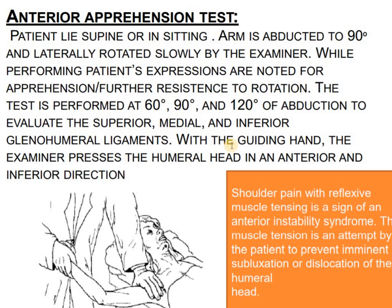With the guiding hand, the examiner presses the humeral head in the anterior and inferior direction. Shoulder pain and reflexive muscle tensing are signs of anterior instability syndrome. This muscle tension is an attempt by the patient to prevent an imminent subluxation and dislocation of the humeral head. This is called the anterior apprehension test, which helps identify anterior instability of the shoulder joint.